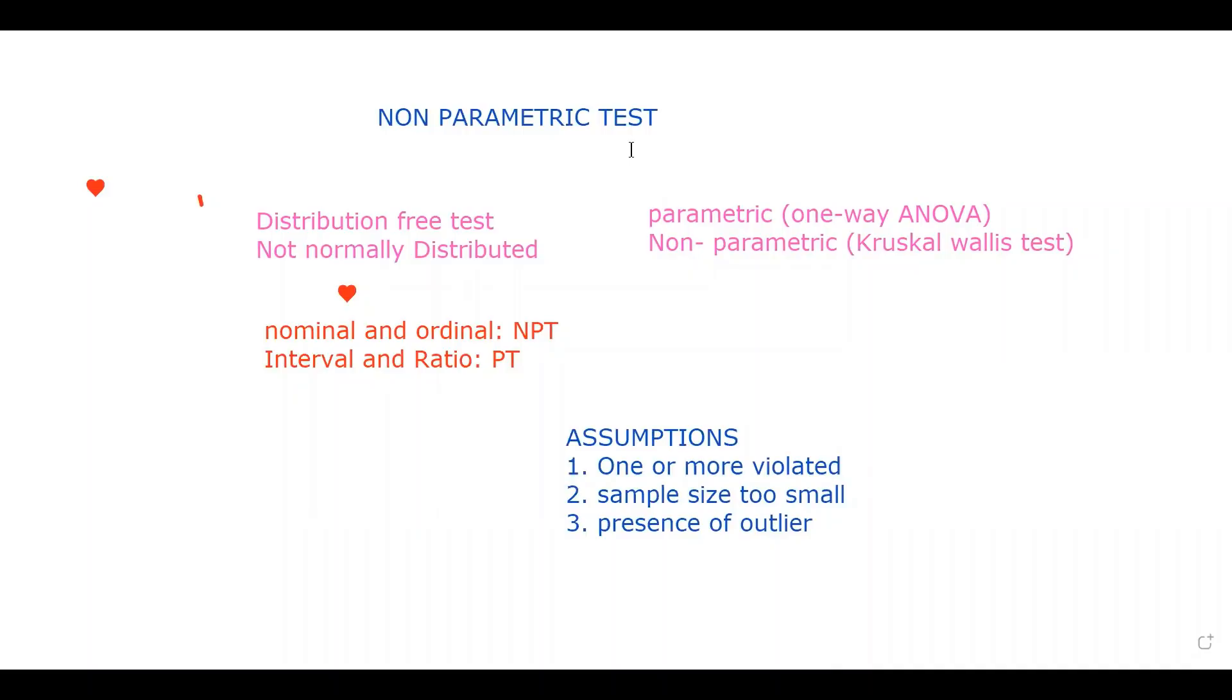Non-parametric test is sometimes known as distribution-free test. It does not assume anything about the underlying distribution. Just like in parametric test, we said the population should be normally distributed. But in case of non-parametric test, there is no such assumption. In other words, we can say that non-parametric test is applied to the population that does not have a normal distribution.